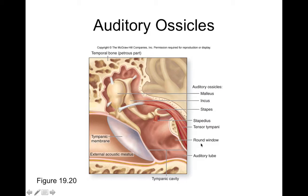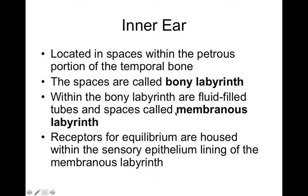We can see the opening to the auditory tube, which helps equalize pressure from the middle ear to the nasopharynx and vice versa, preventing too much pressure from building up and potentially damaging the tympanic membrane or other nearby structures.